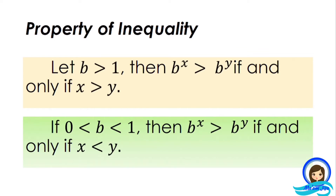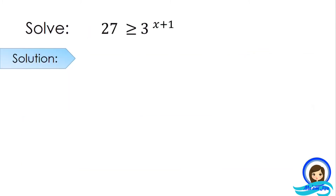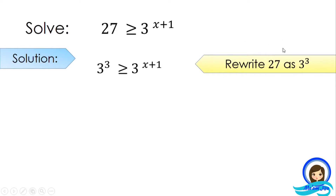To better understand this property, let's proceed to our illustrative examples. Let's have our first given: 27 is greater than or equal to 3 raised to the exponent x plus 1. The first thing to do is to rewrite 27 as 3 cubed.